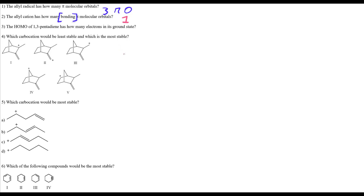Question 3: the HOMO (highest occupied molecular orbital) of 1,3-pentadiene has how many electrons in its ground state? Let's draw 1,3-pentadiene — five carbons with 'penta,' and two alkenes with 'diene.' The double bonds are between C1-C2 and C3-C4, giving us 1,3-pentadiene.